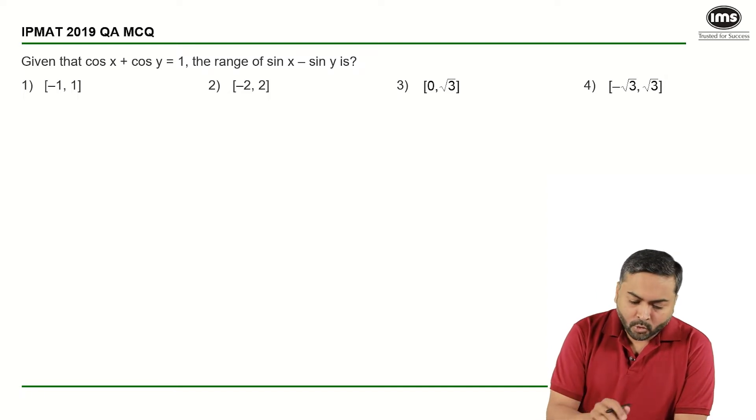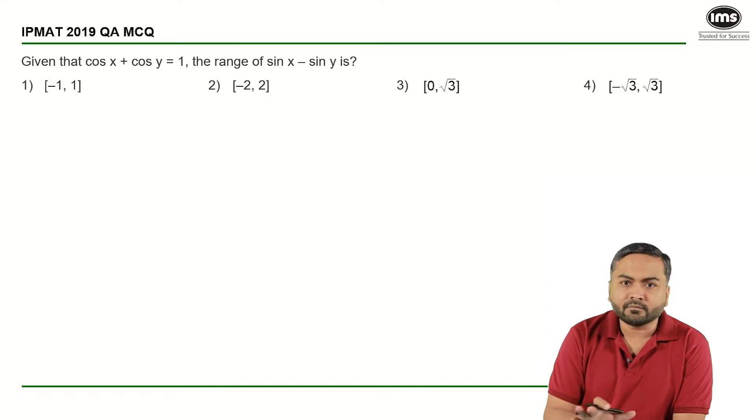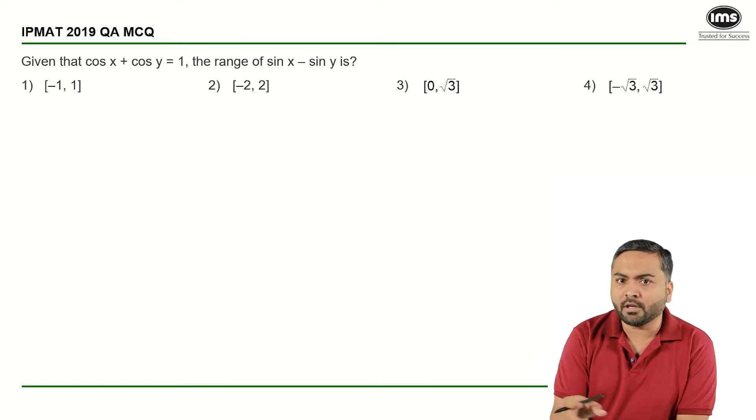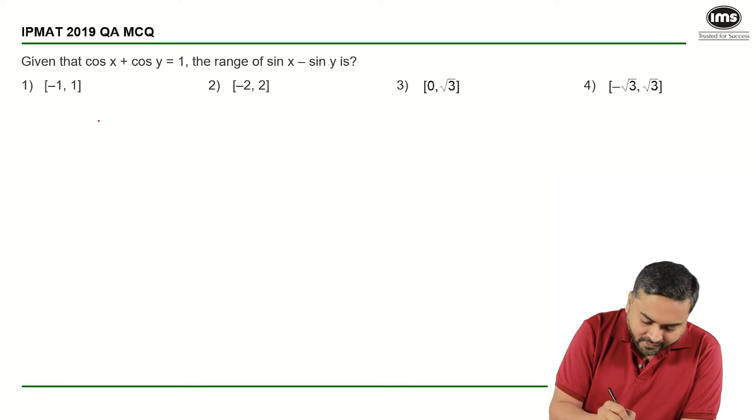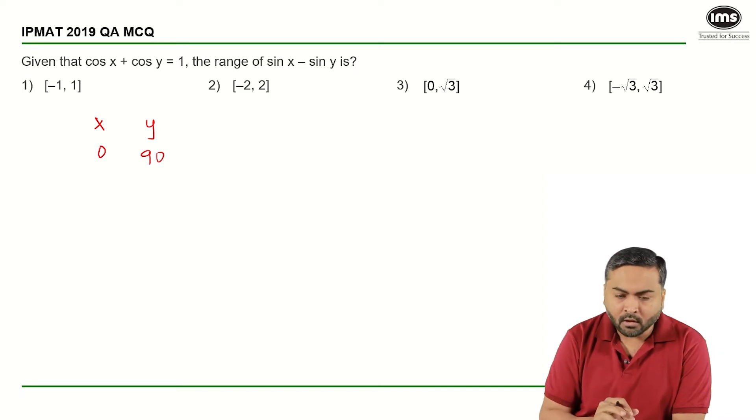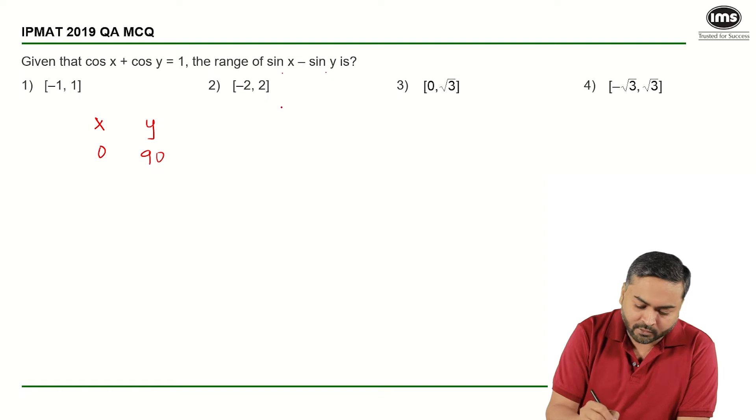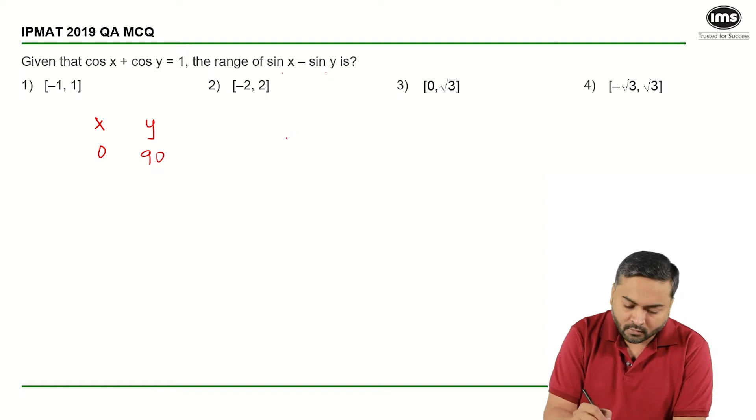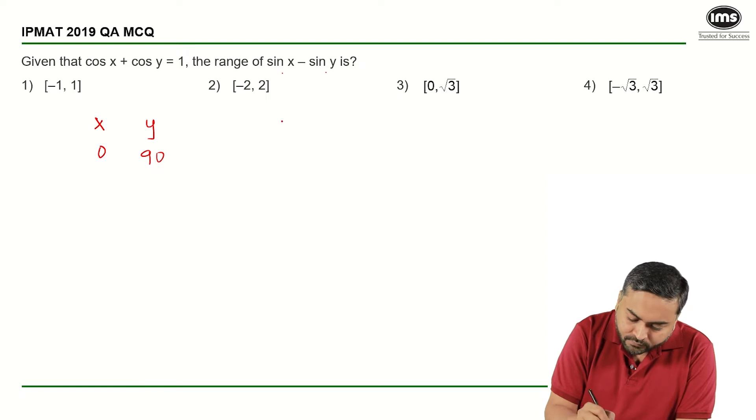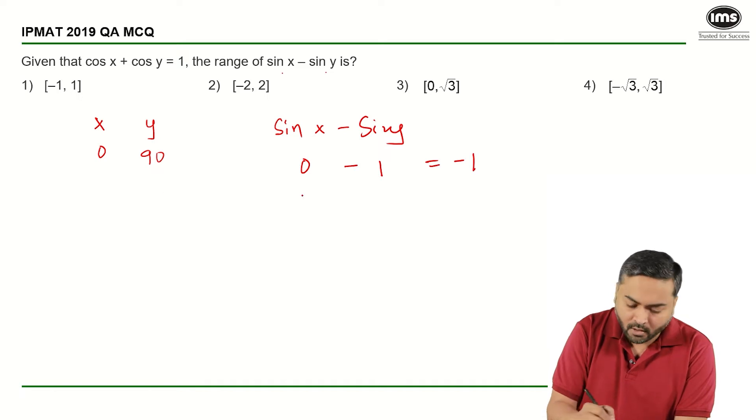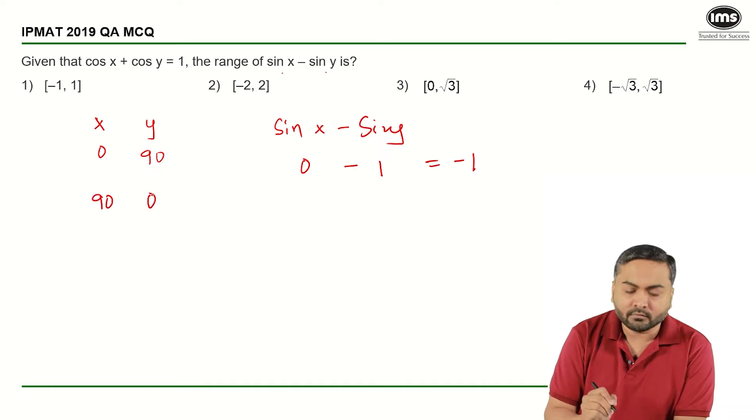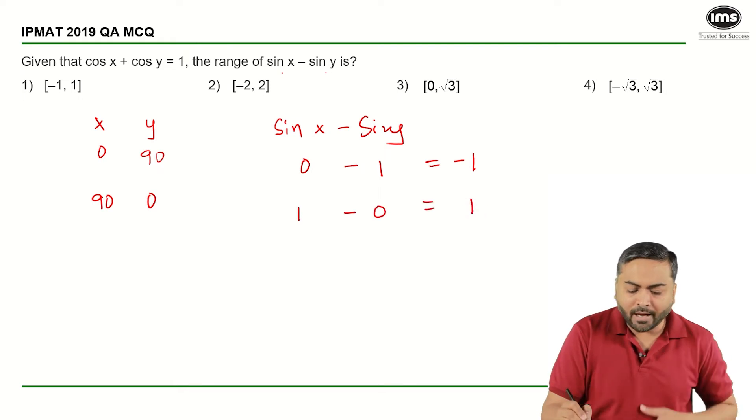We can solve this question by the trigonometric way, but the best approach in an exam would be by assuming values. When can cos x + cos y equal 0? If x equals 0 and y equals 90, or vice versa. In that case, if x equals 0, sin x will be 0. So sin x minus sin y will be 0 minus 1, which is minus 1. And if x is 90 and y is 0, I get 1 minus 0, which is 1.